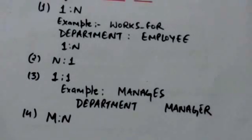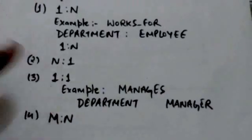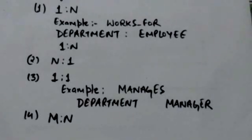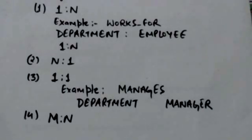Fourth is M to N. In this case, an entity in A is associated with any number of entities in B, and an entity in B is associated with any number of entities in A.